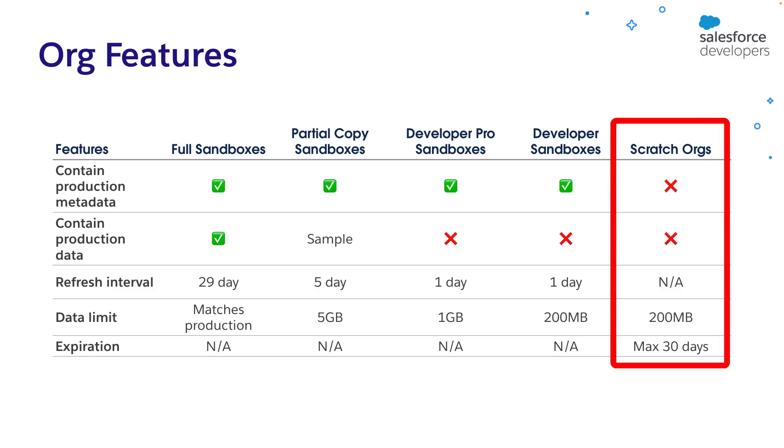For development and QA, there is another type of org you can use: scratch orgs. Scratch orgs are short-lived — they live a maximum of 30 days. Scratch orgs don't copy your production org metadata. Instead, you have to deploy the metadata yourself by storing your metadata in a source control repository and automating the metadata deployment process.